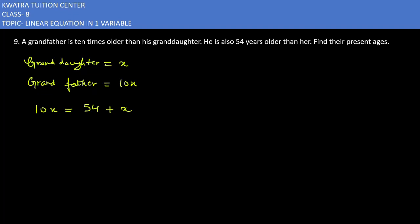Granddaughter's age is equal to x. What do we need to do next step? x to the left side. So, 10x minus x is 54.